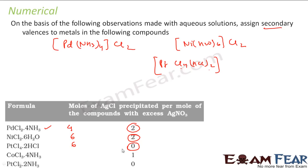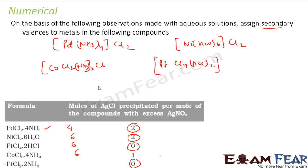For CoCl3·4NH3, cobalt is the central metal. It gives one mole of AgCl, so one chlorine is outside. The remaining two chlorines and four ammonia molecules are inside — that gives 4+2 = 6, so the coordination number is 6. For the last compound, it gives zero moles of chlorine, so everything is inside: PtCl2 and 2NH3. That gives 2+2 = 4, so the coordination number is 4 and the secondary valence is 4.